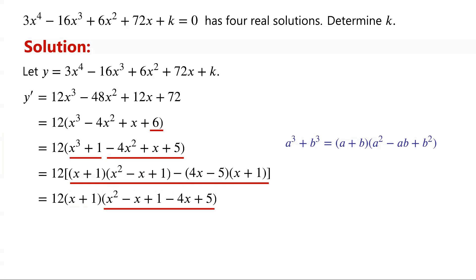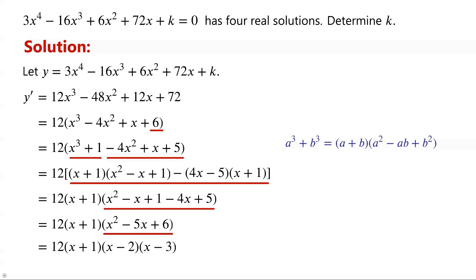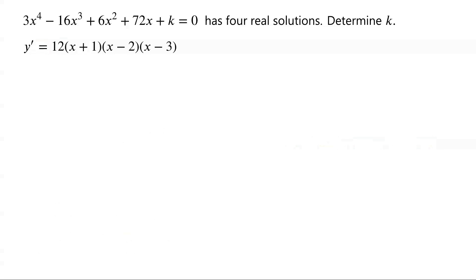x squared minus x plus 1 minus 4x plus 5 can be simplified to x squared minus 5x plus 6. The expression x squared minus 5x plus 6 can be factored as (x minus 2)(x minus 3). To find the critical points, we let y' equal 0.